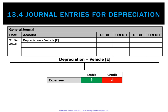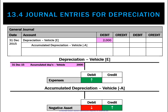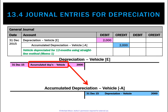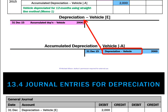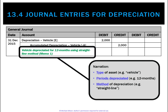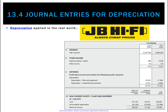Looking at the general journal, at the end of 2015 we record a debit to depreciation of vehicle and a credit to accumulated depreciation of vehicle. It's very important to include the name of the asset in the ledger title, since we may have multiple non-current assets like vehicles, property, and machinery. For the narration, give a detailed description: the type of asset, the number of periods depreciated (12 months), the method used (straight-line), and the memo number — this detailed narration earns four marks.